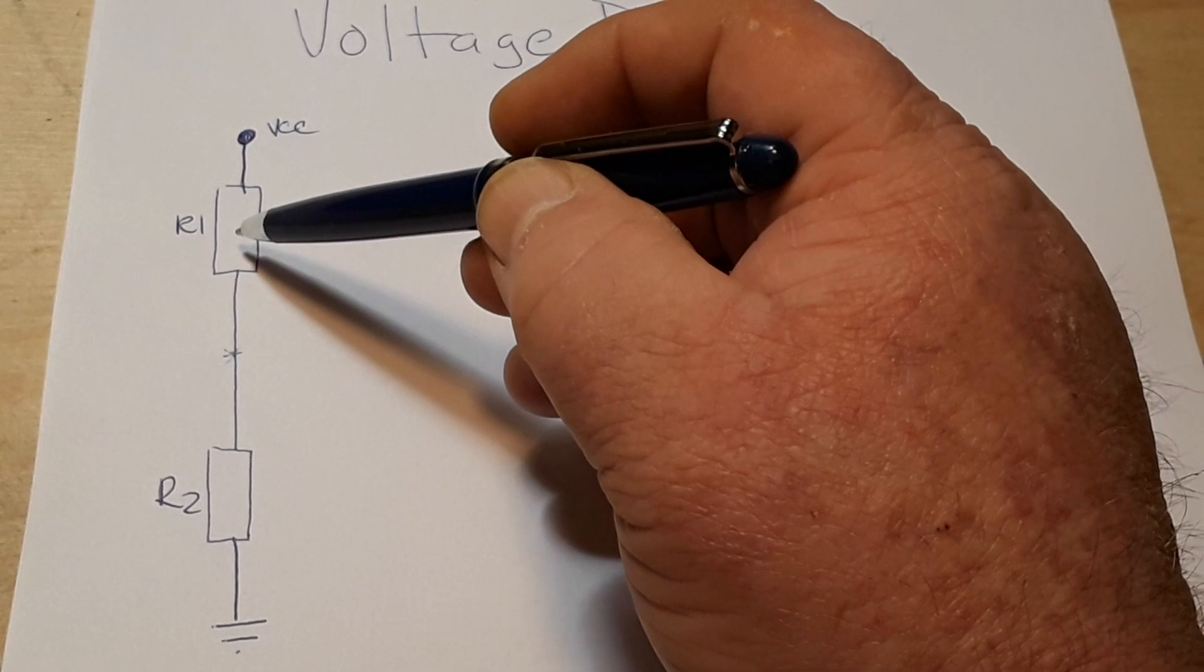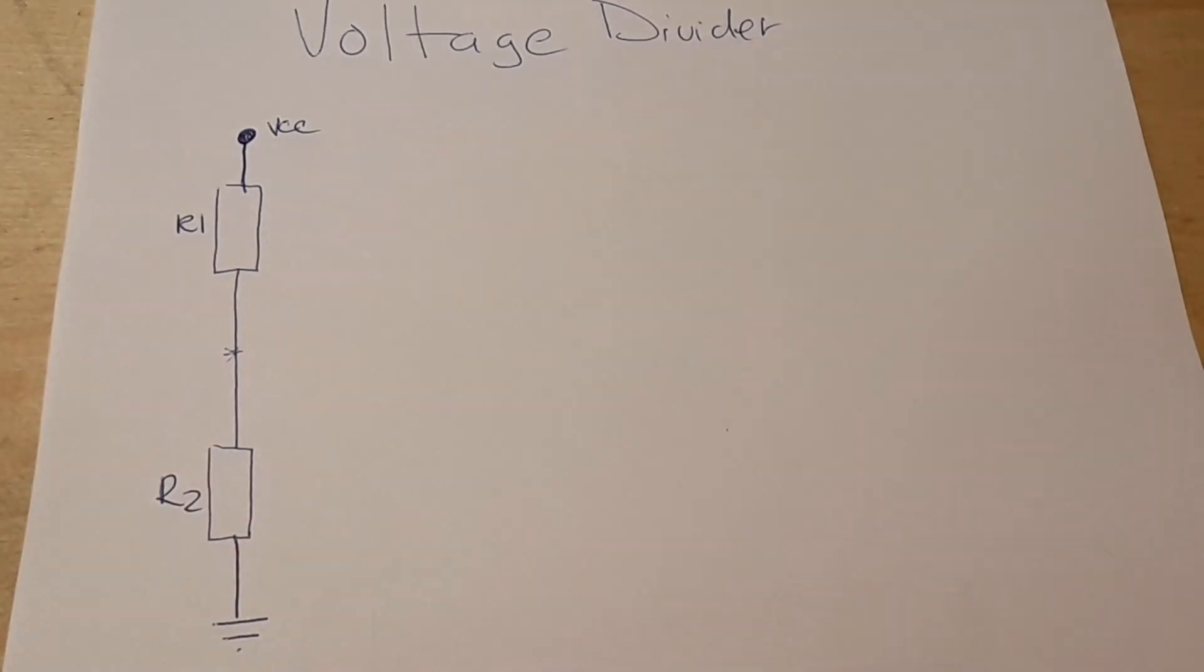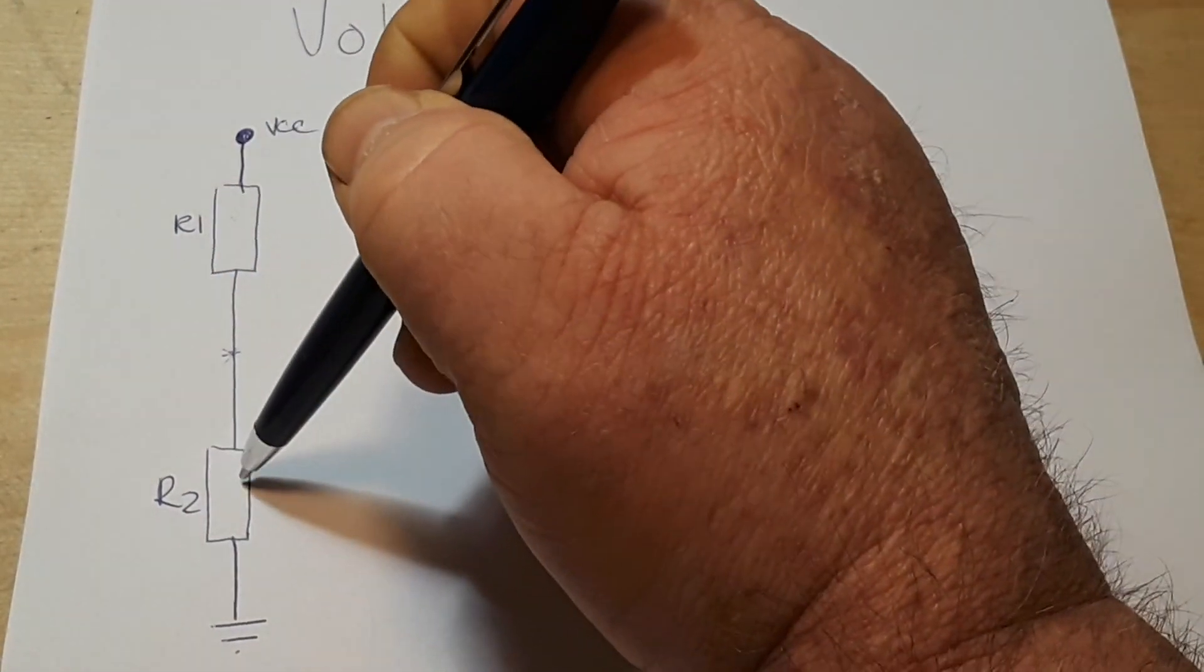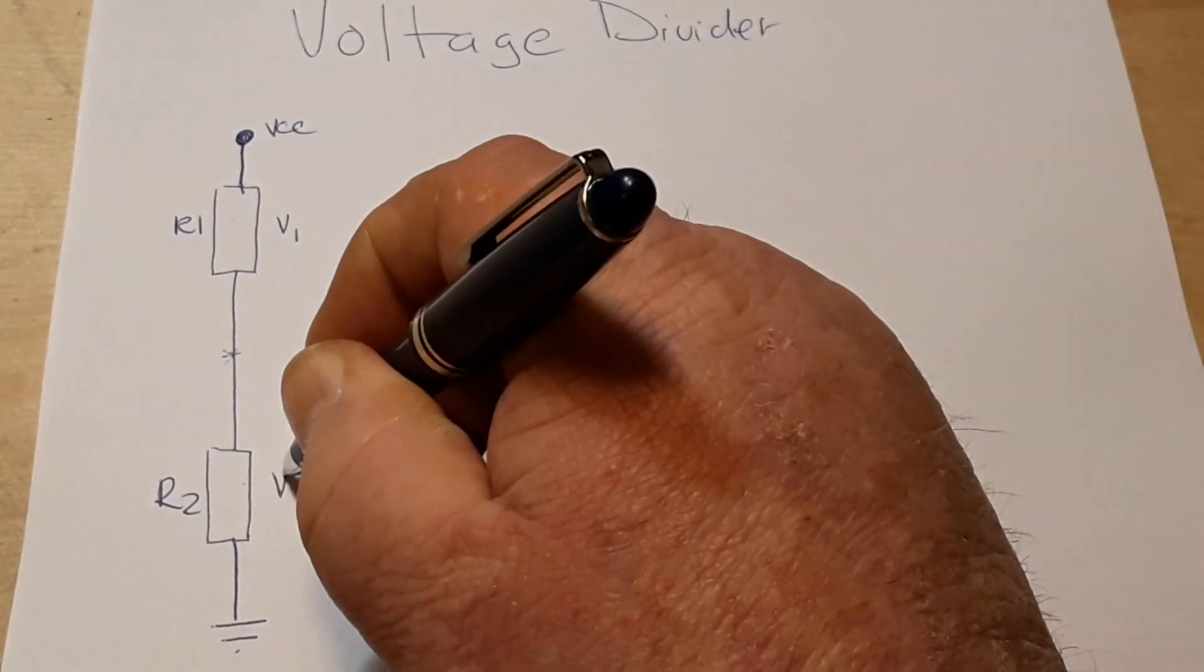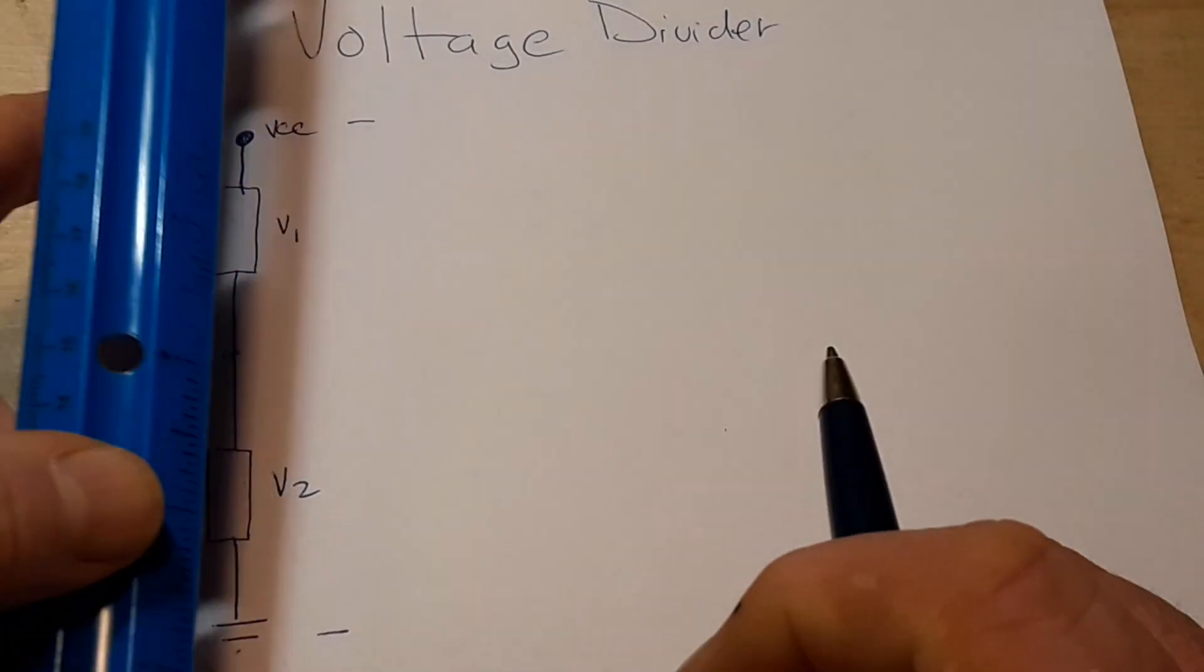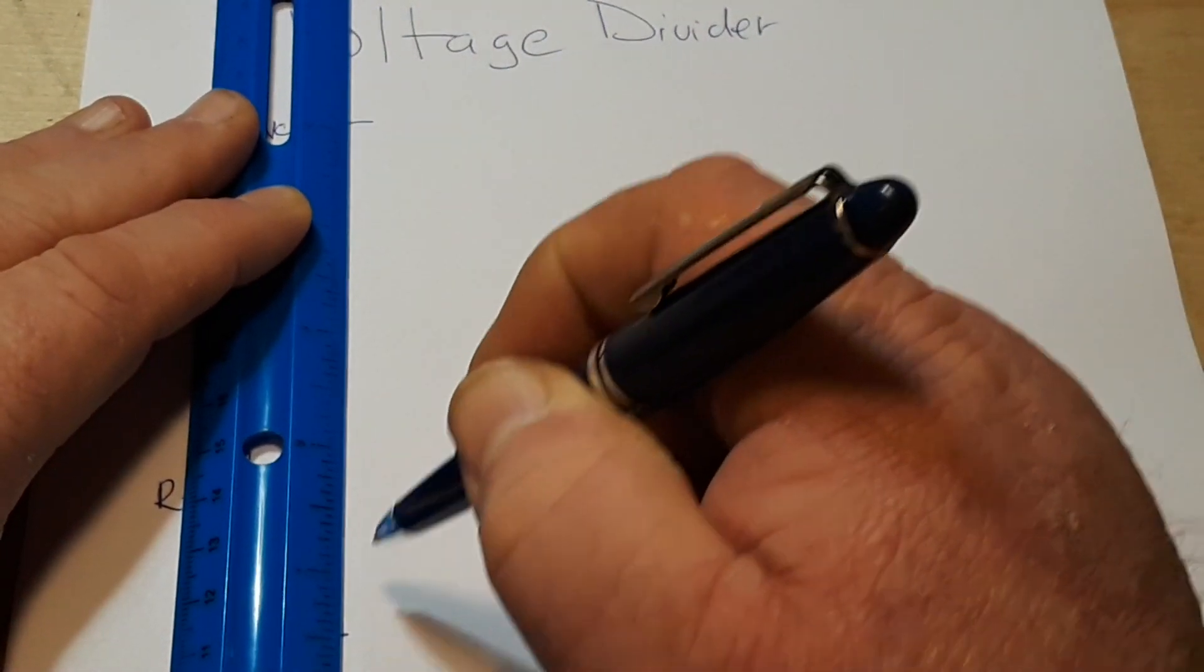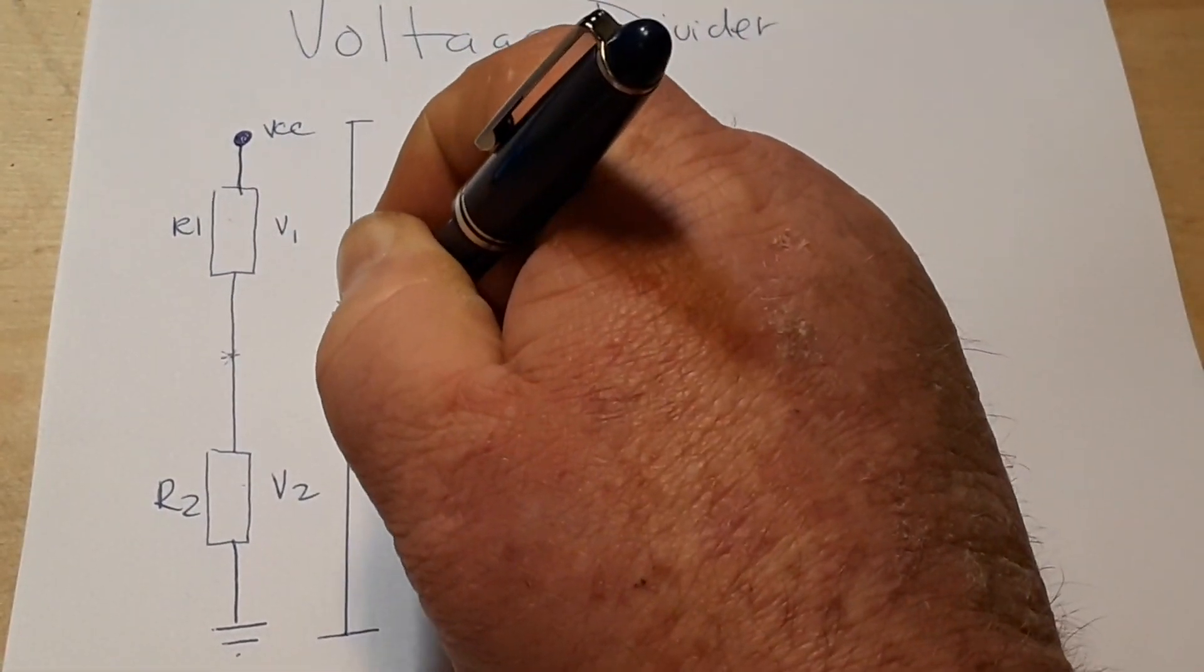What if this one is 62K and this one is 470 kilo. I just made those numbers off the top of my head. They don't mean anything. But, so, we have resistor 1, resistor 2. Then we will also be able to measure voltage 1 and voltage 2. And, of course, our voltage over the entire thing, which we would call E.